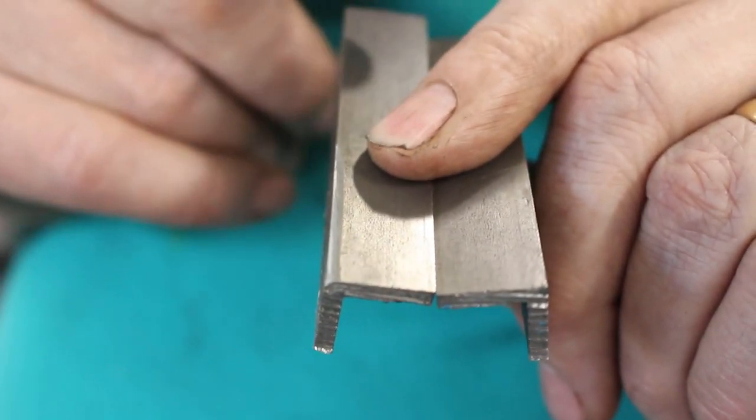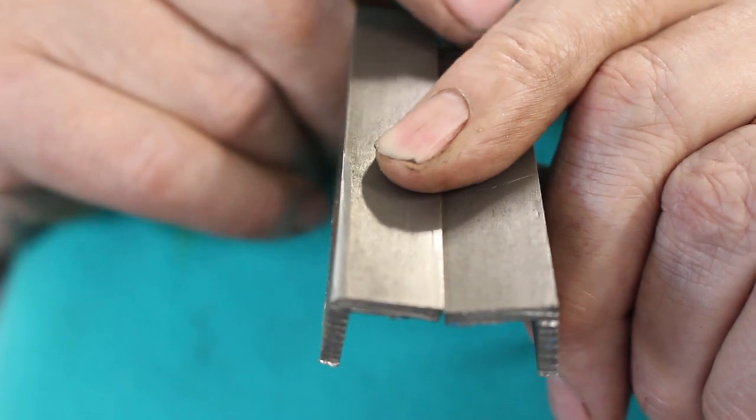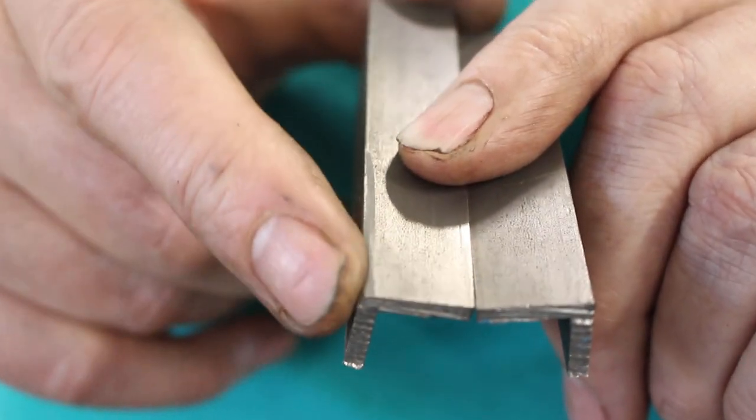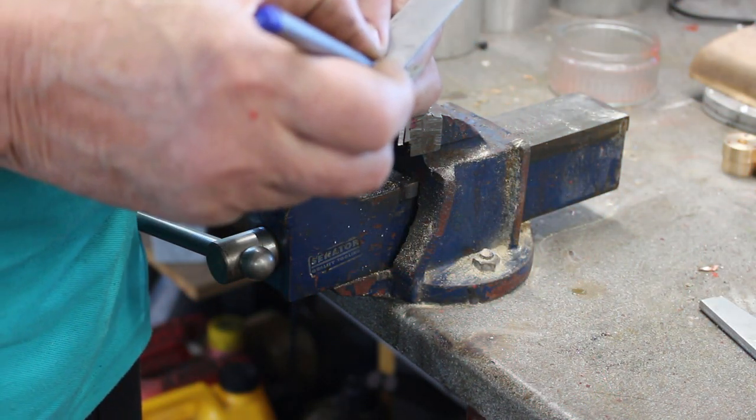To do the bending of the brackets I'm just using a couple of bits of angle and the vise, and one has a radius to put a radius on the bend. I'll just draw a line on more or less where I want to bend as a guide.